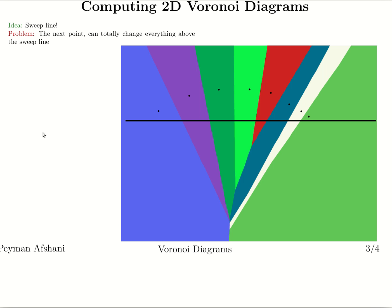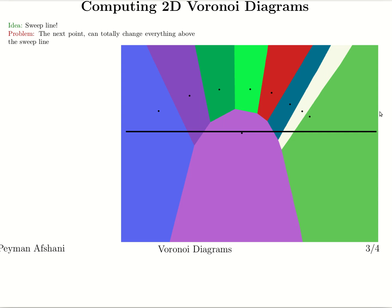In a traditional sweep line algorithm, we sweep a line from plus infinity to minus infinity and update at the event point. We maintain a computation of stuff that is above the sweep line, and when we encounter the next point, we update what happens on the sweep line. For instance, for line segment intersection, you find the intersection of line points as the next event points. The problem with computing the Voronoi diagram is that the next event point could change a lot of things above the sweep line, meaning a lot of computation could be thrown away. If this happens over and over again, your algorithm might be inefficient and take a lot of time.